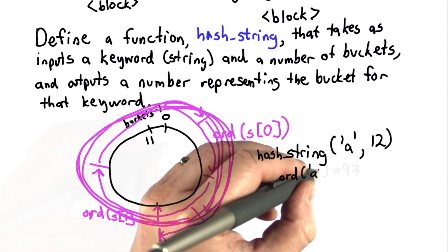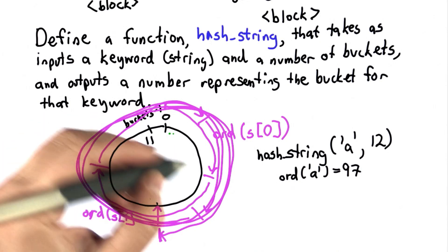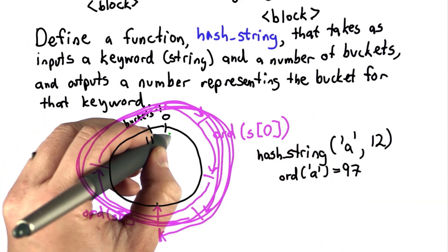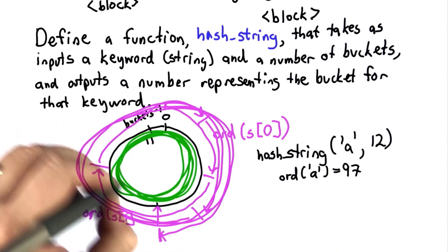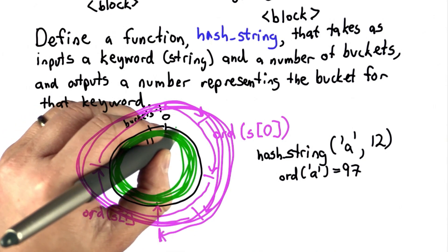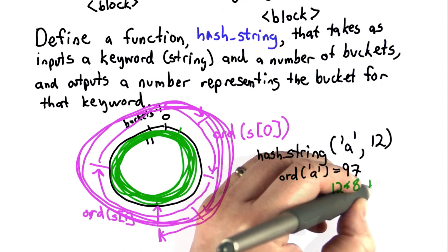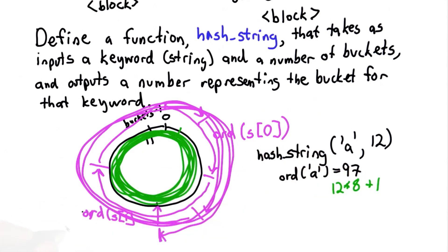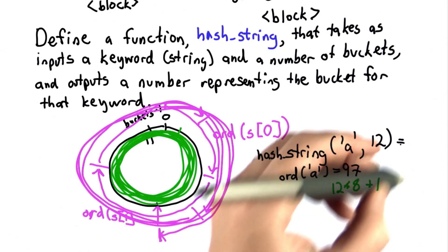For A what we would do is go around the circle 8 times, because 97 is 12 times 8, and one more, because 97 is 12 times 8 plus 1, which you don't actually have to go around the circle. If you use the modulo, that's what it will give you, and so the hash value for A should end up in bucket 1.